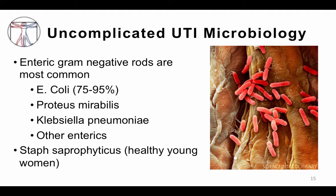The microbiology of uncomplicated UTIs typically includes enteric gram-negative rods, the vast majority of which are E. coli. Others include Proteus and Klebsiella, in addition to other enterics. Of note, Staphylococcus saprophyticus is a gram-positive that can affect healthy young women. In contrast, Staph aureus is not considered a uropathogen, but can cause urinary tract infections in the setting of instrumentation or genitourinary procedures. Isolation of Staph aureus in the urine should raise concern for hematogenous seeding of the genitourinary tract. Other organisms are unusual outside of catheter-associated UTIs, instrumentation, and immunosuppression.